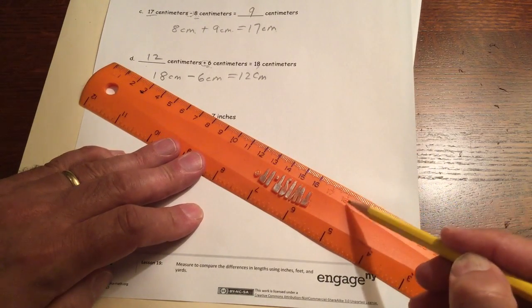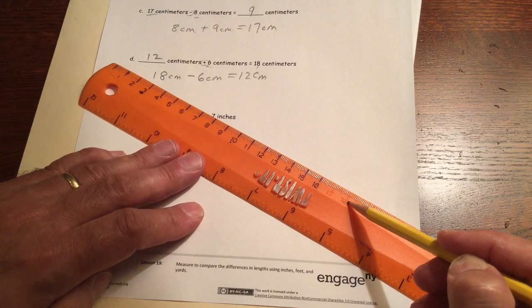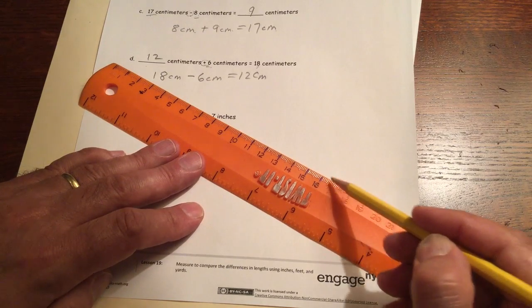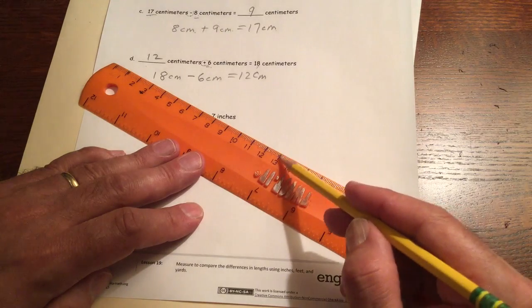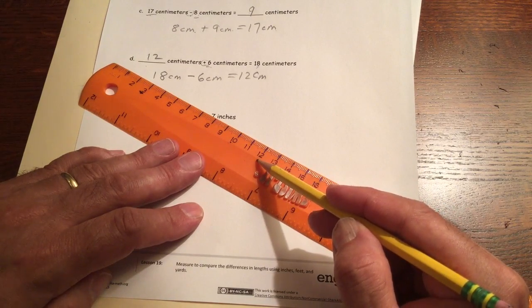You can use your ruler for it. Now I haven't highlighted past this, the 18, but I can just go ahead and count 6 of them back. 1, 2, 3, 4, 5, 6, and there's the 12. That's what I should have.